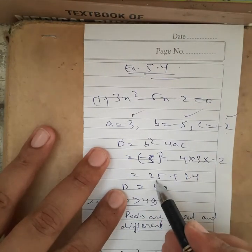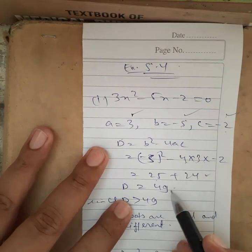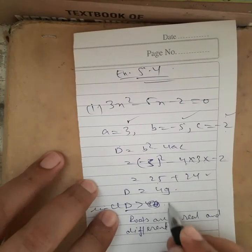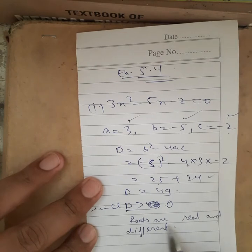b is replaced by -5, so (-5)² = 25. 4 times 3 is 12, times 2 is 24. So D = 49. Since D is greater than 0, the roots are real and different.